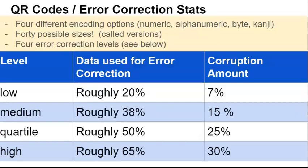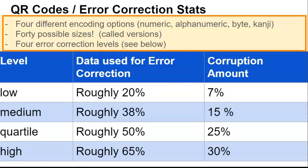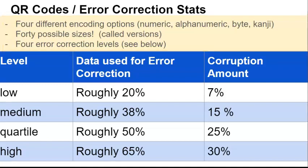When it comes to QR codes, we've got four different encoding options, ranging from numeric (numbers), alphanumeric (letters and numbers), bytes, and kanji. There are also 40 possible sizes called versions, and four levels of error control, ranging from low, where we can only have 7% corruption, to high, where 65% of the data that we're sending is involved with error correction, but we can have up to 30% errors and they will still be corrected.